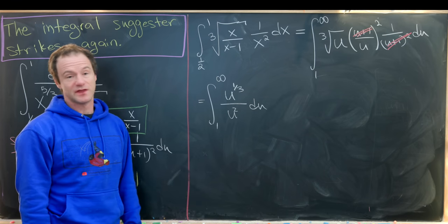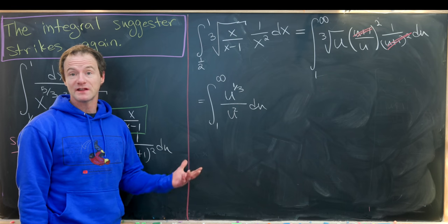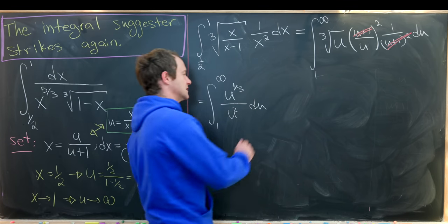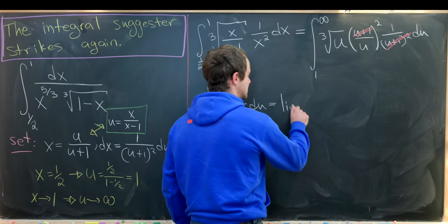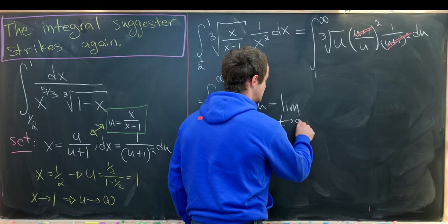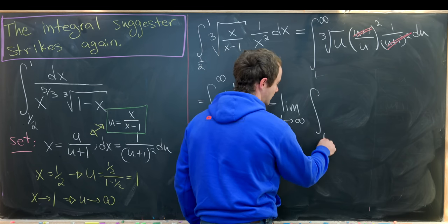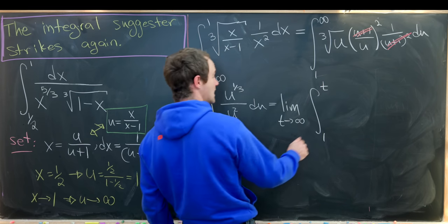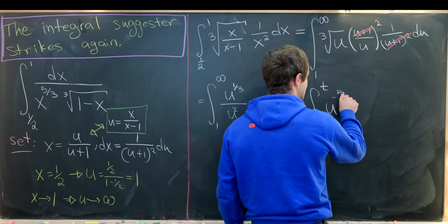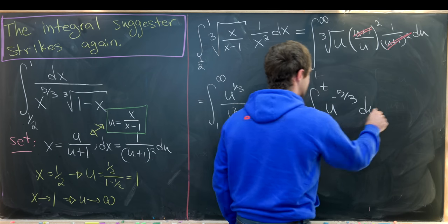But now I can approach that just with the power rule. And maybe let's also do this officially by using a limit. So this will be the limit as t approaches infinity of the integral from 1 to t of u to the minus 5 thirds du.